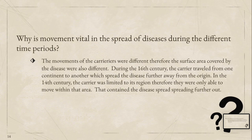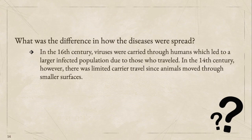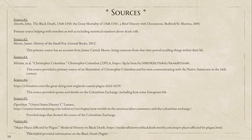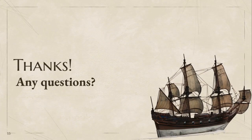That contained the disease from spreading further out. For the second question, you could have written: in the 16th century, viruses were carried through humans, which led to a larger infected population due to those who traveled. In the 14th century, however, there was limited carrier travel since animals moved through smaller surfaces. An acceptable answer for question three could have been: the spread of disease during the 14th and 16th century differed; however, the human reaction to the occurring events were very similar — it still caused devastation and sadness to those impacted. Here you will see a list of sources we used throughout our project. I hope you enjoyed. Thank you.